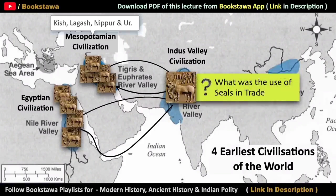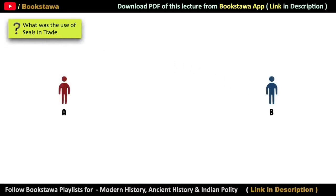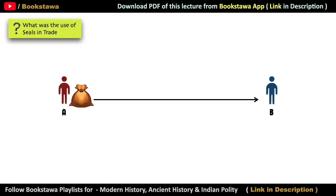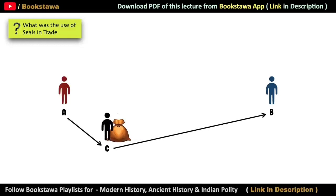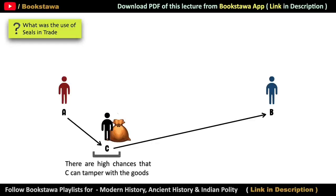What did these seals have to do with trade? Suppose A wants to sell his goods to B, but it is not necessary that the merchant should also be the delivery person. Even at that time some people used to do delivery work — A would give his goods to delivery boy C, and it would be C's responsibility to deliver the goods to B. The problem was that C could open the sack, remove the goods, and replace valuable things with cheap things. A solution was found so that C could not tamper with the goods in any way.